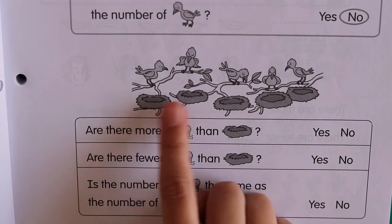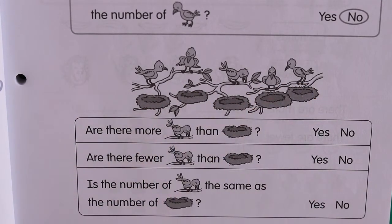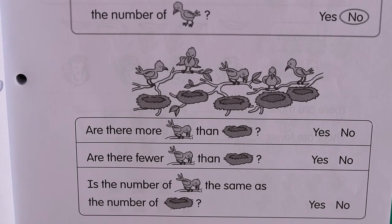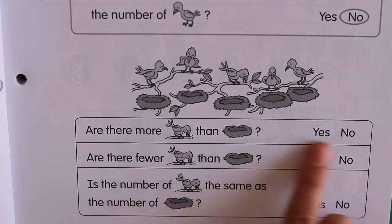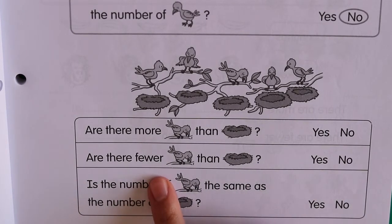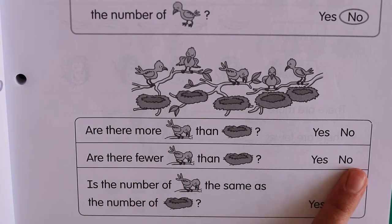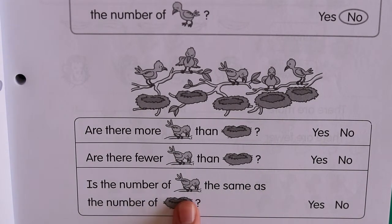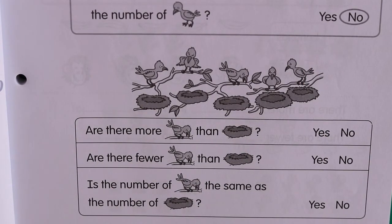And the nests: one, two, three, four, five. So there were five birds and five nests. Are there more birds than nests? No. Are there fewer birds than nests? No. Is the number of birds the same as the number of nests? Five and five — is five and five the same? Yes.